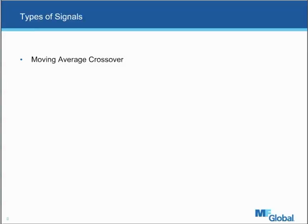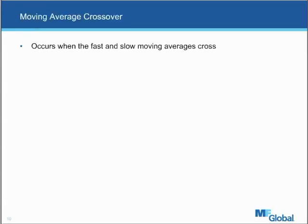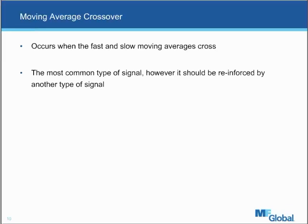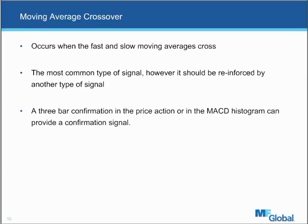There are basically three major types of signals from the MACD: the first is a moving average crossover, the second is a center line crossover, and the third is positive and negative divergence. The moving average crossover occurs when the fast and slow moving averages cross — it is the most common type of signal. However, because it's so common, I recommend it be reinforced by another type of signal, either within the MACD or externally from another indicator. Especially in volatile markets, you may get a lot of false signals. One type of reinforcement would be to look at the histogram on the MACD and look for a three-bar confirmation on that price action.